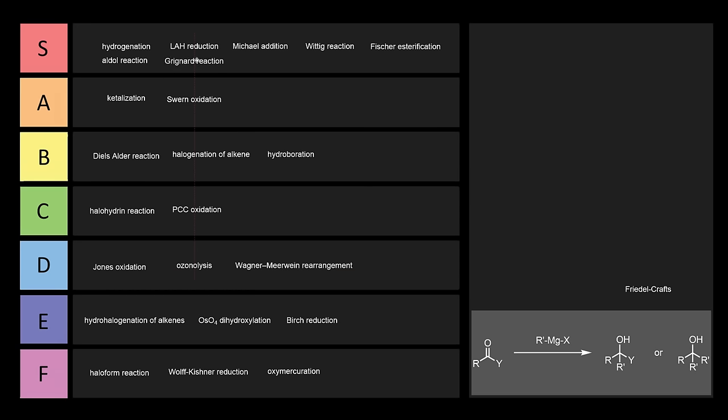Now, the Grignard reaction, easy S tier. Grignards are super useful. Once you halogenate something, you can convert it to a Grignard reagent. You can convert it to the umpolung. So instead of having a C which is electrophilic, you can have a C which is a nucleophile. So that's pretty useful. You can add it to ketones, aldehydes, you name it. Grignards are super useful. Easy, easy S tier.